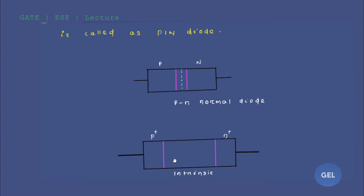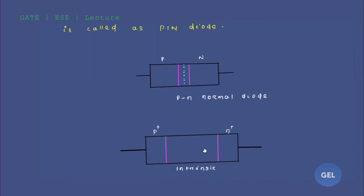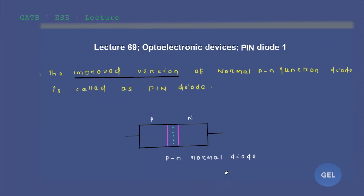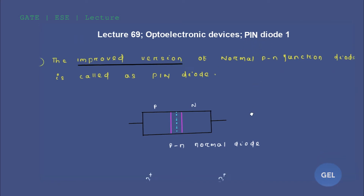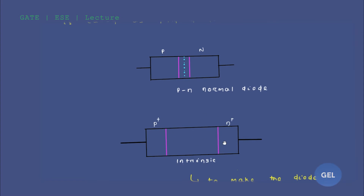The remaining portion between the p-plus and n-plus region remains as intrinsic semiconductor. So this is your P, this is your I (intrinsic), and this is your N — that is why it is called a p-i-n diode: p-type, intrinsic type, and n-type. These three together form the PIN junction.